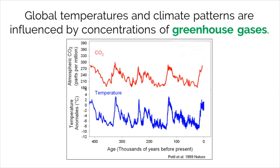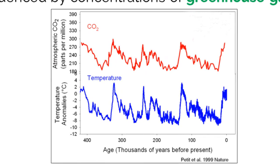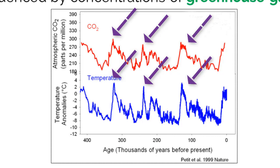Scientists have been collecting temperature data for decades and can reference old geological samples of earth to predict temperature patterns that occurred thousands of years ago. When they match them up with concentrations of greenhouse gases, they find a relationship: global temperatures and climate patterns are influenced by concentrations of greenhouse gases. This figure shows how temperature anomalies actually match up to increased atmospheric carbon dioxide concentrations.